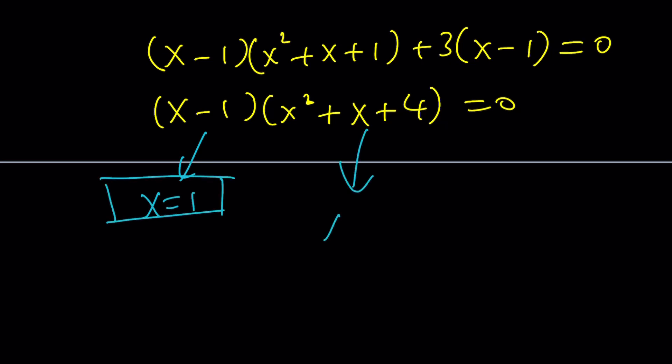Negative b plus minus the square root of b squared 1 minus 4 times 4, which is 16. 1 minus 16 is negative 15. So this is going to give you root 15 times i, which is non-real, divided by 2.